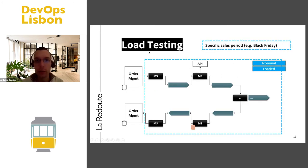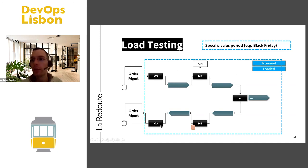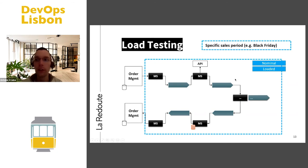For load tests, we took the full scope, because load testing isn't about a specific component — we need to make sure that if we have a peak of, say, a thousand orders, we are able to process them in a defined timeframe for the customer to receive feedback and shipping confirmation. This is why for load tests we address the full scope on both nominal and loaded periods to identify limiting factors.